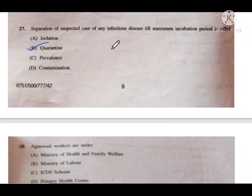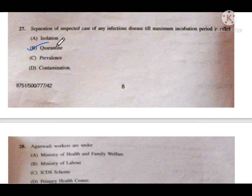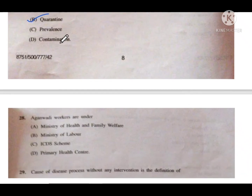Isolation applies when a patient is already infected. Prevalence refers to the number of cases of disease present in a population at a specific time. Contamination means making something impure.